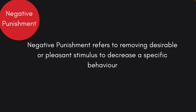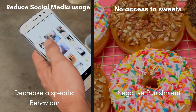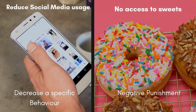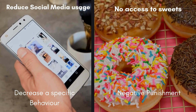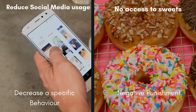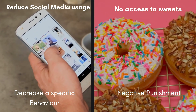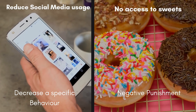Negative punishment refers to removing a desirable or pleasant stimulus to decrease a specific behavior. For example, if you want to reduce your social media engagement, you might set a rule that if you spend more than 20 minutes a day on social media apps, you will restrict your access to your favorite sweets. Since you enjoy the sweets, restricting them is undesirable, so you will decrease your social media engagement to avoid losing them.